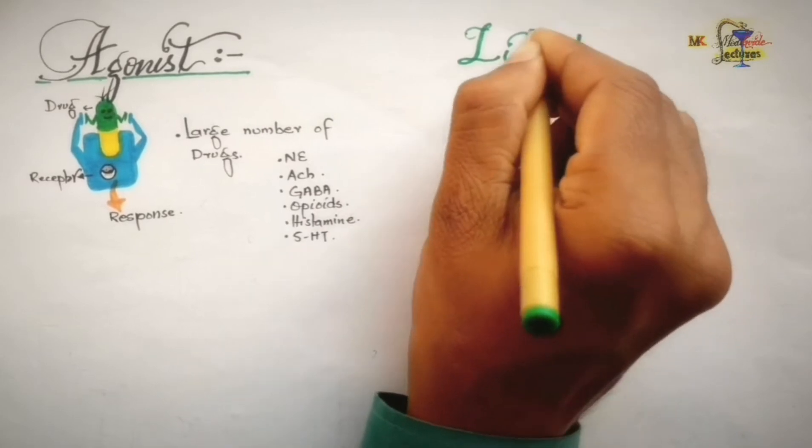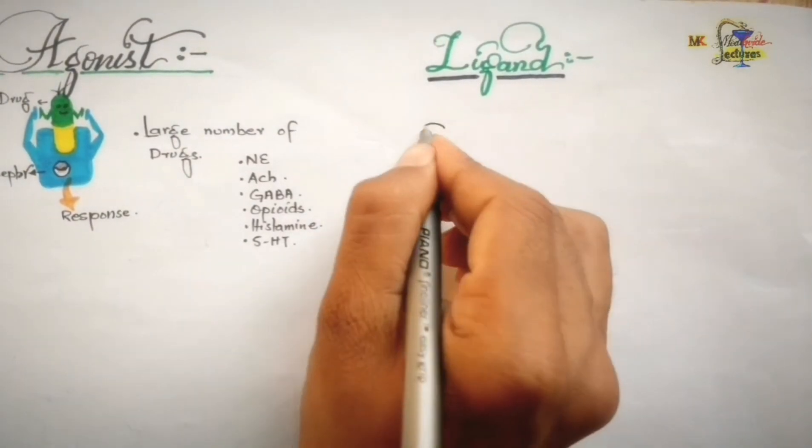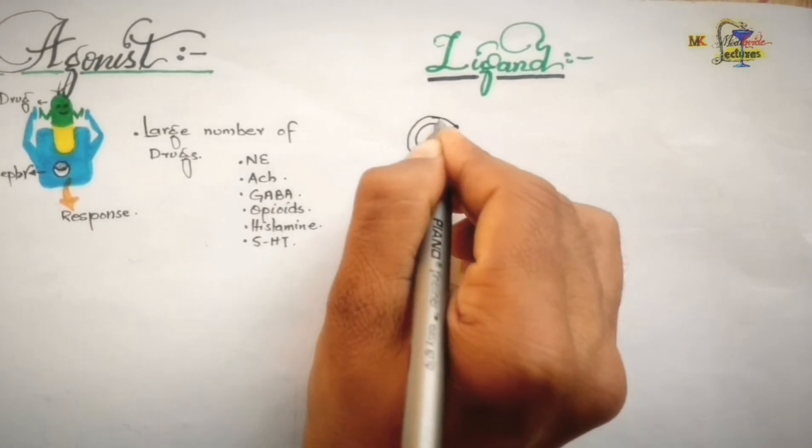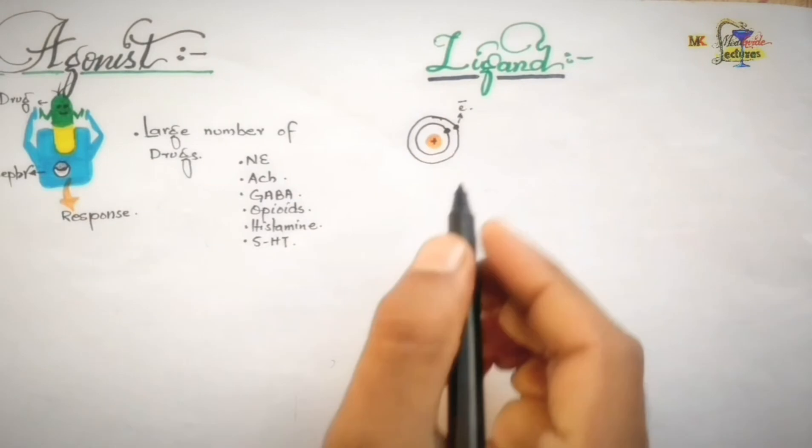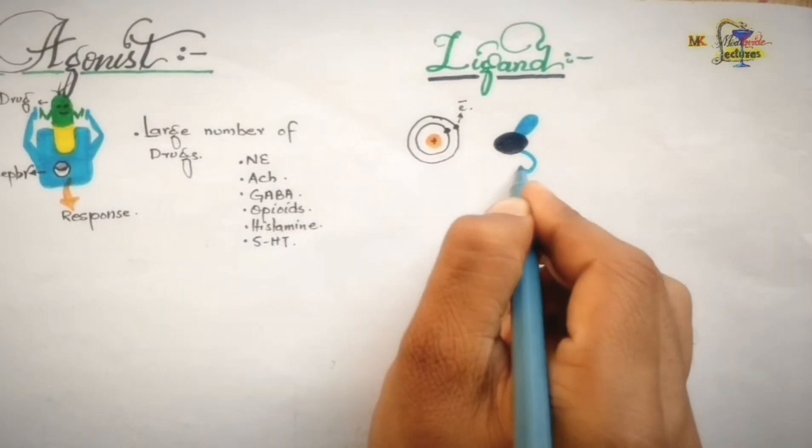Besides this, sometimes the term ligand is used for agonist, which is a broader term than agonist. Ligand can be anything like atom, molecule, ion, or functional group which binds to another chemical entity and forms a larger complex.